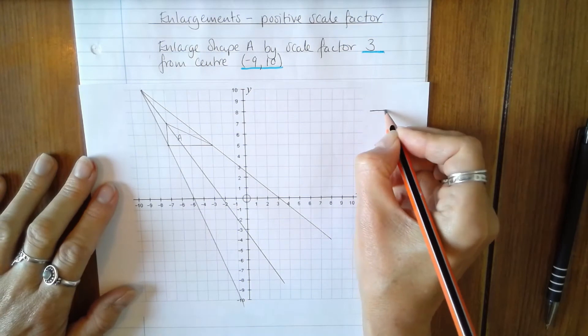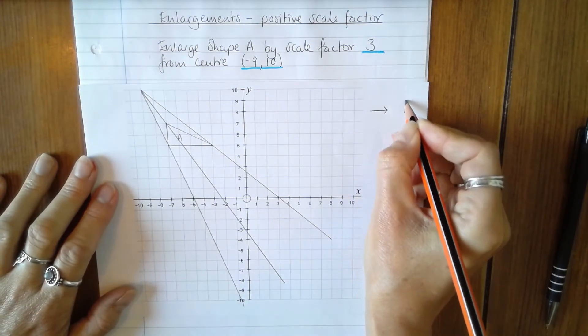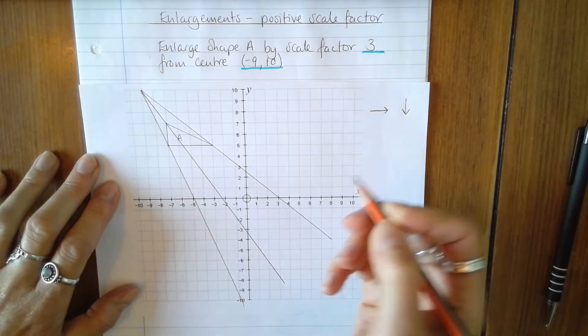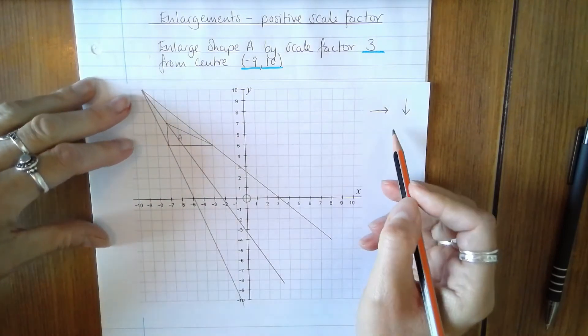So I don't want to forget what I've counted, so I'm going to draw some arrows on the side and write the numbers down.